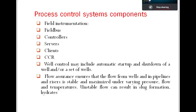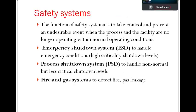The safety system handles many undesirable events in a process — events you don't want to happen but which can occur. The function of the safety system is to take control and prevent an undesirable event when the process and facility are no longer operating within normal conditions. For example, if the PLC is not operating, the mechanism to stop the operation must exist.